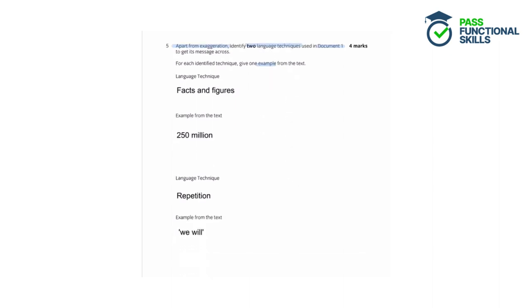The student has identified facts and figures as a language technique, with the example of £250 million — a relevant figure from the text. They've also identified repetition: certain words or phrases repeated within the text. Repetition is definitely present in document one — there is a repetition of the phrase 'we will' throughout the text.